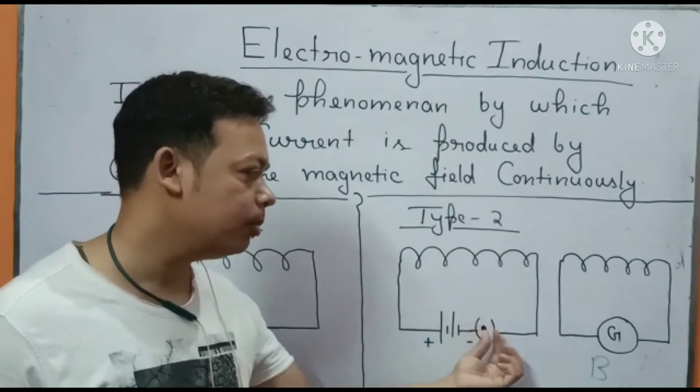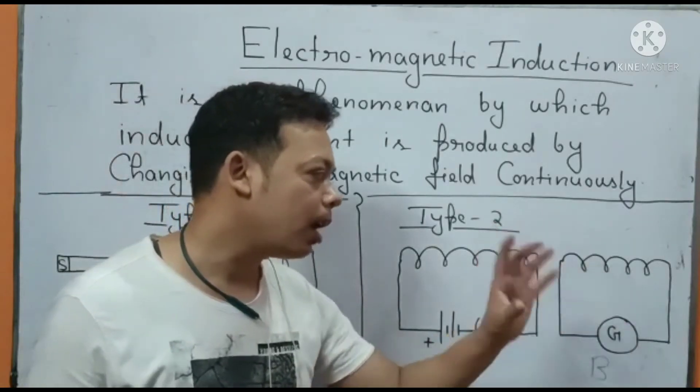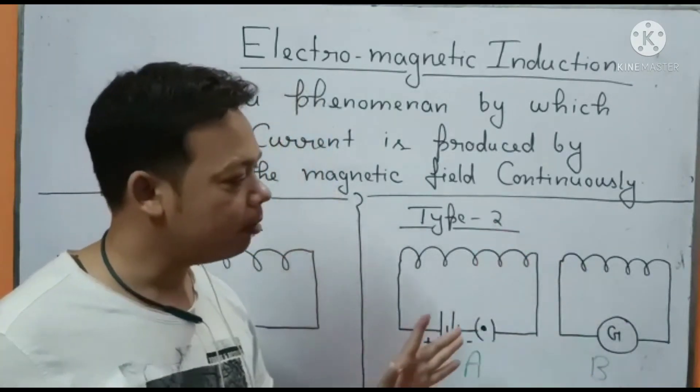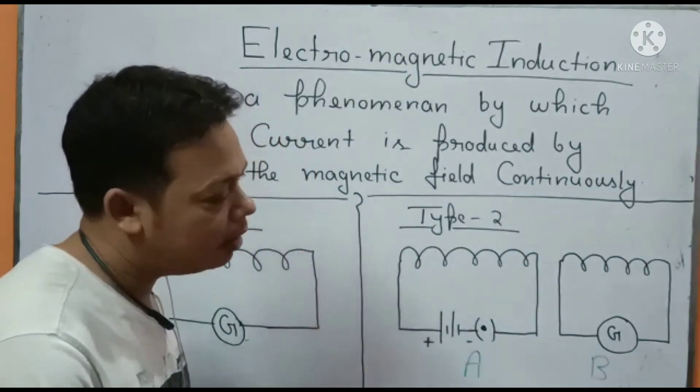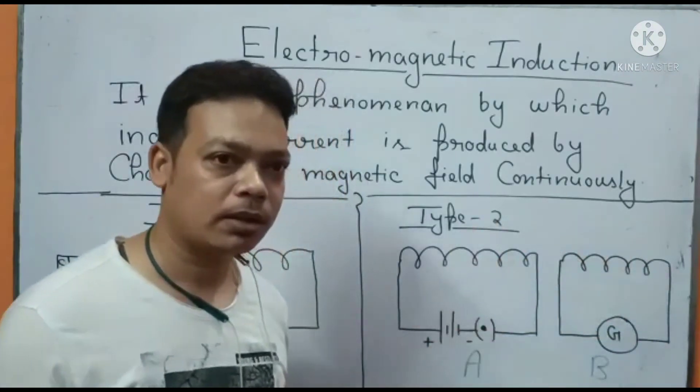There is a battery and a switch. In the second coil there is no battery, no cell, only a galvanometer is connected to detect whether current is flowing through the coil or not.